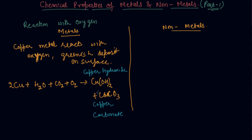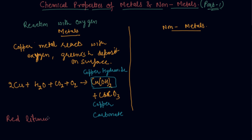Now when you test this metal with litmus paper, what you will observe is that red litmus paper — let me show it with red color — turns to blue. This means the oxides of metals are basic in nature.